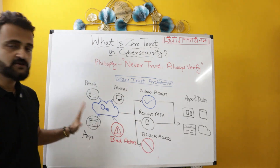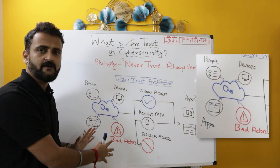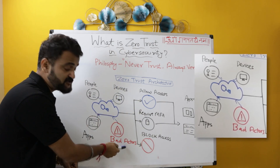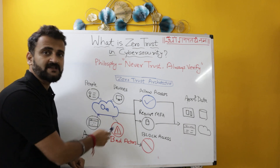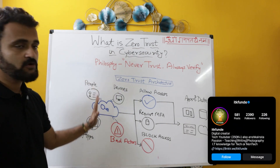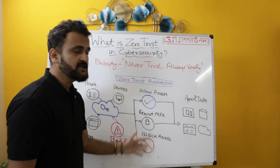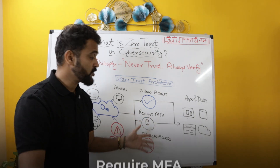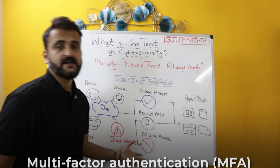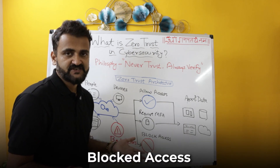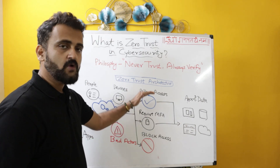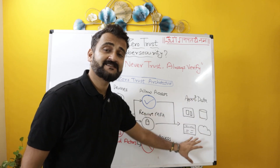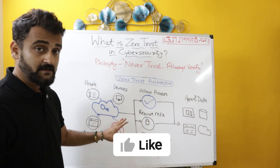This is a basic architecture of zero trust. On the left, we have all the sources which could be generating requests — it could be people, devices, apps, and even bad actors. But everyone has to go through zero trust validation. Based on the authentication and validation, three actions could be taken: they will be allowed access, or the next level of authentication — multi-factor authentication — is required, or access is blocked because something suspicious is going on. On the right, if the first two outcomes apply, you finally get access to your applications, databases, and services.